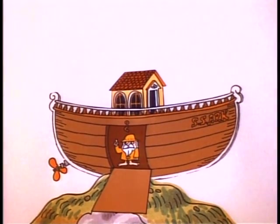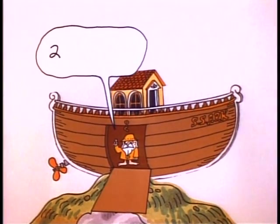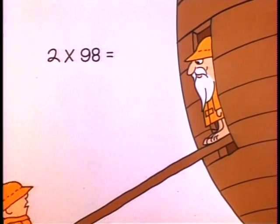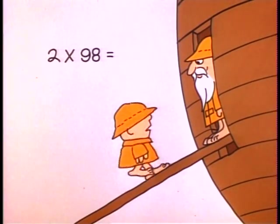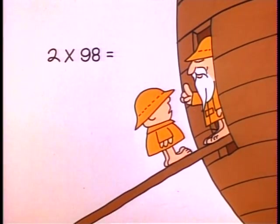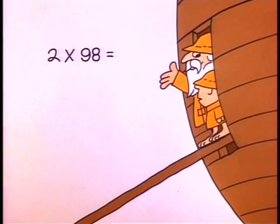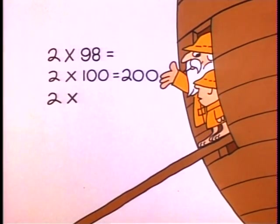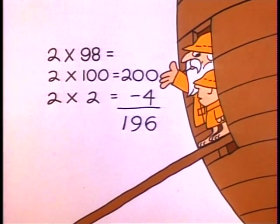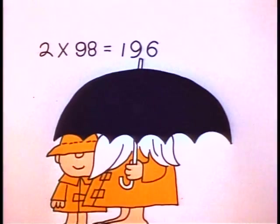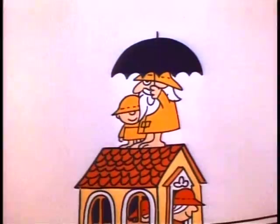Now, what's two times ninety-eight? Aw, that's hard! No, it's very simple — two times ninety-eight equals two times a hundred minus two times two. That's two hundred minus four — a hundred and ninety-six. Elementary!